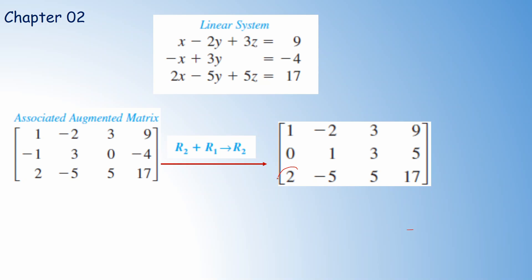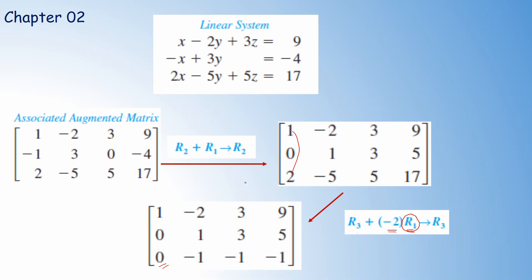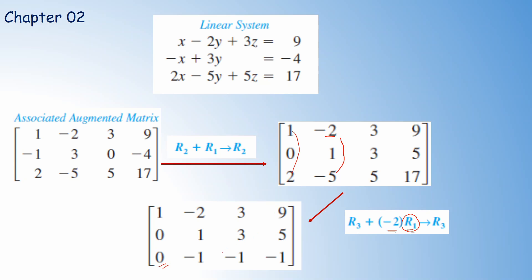We want to make the entry in the third row also 0. We multiply the first row by minus 2 and add into the third row. Then: minus 2 times 1 plus 2 is 0; minus 2 times minus 2 is plus 4, and 4 plus minus 4 is minus 1; minus 2 times 3 is minus 6, and minus 6 plus 5 is minus 1; and minus 2 times 9 is minus 18, and minus 18 plus 17 is minus 1. Now we obtain this resulting matrix.